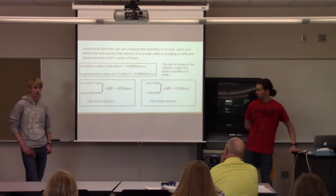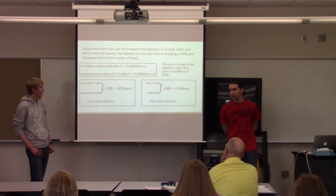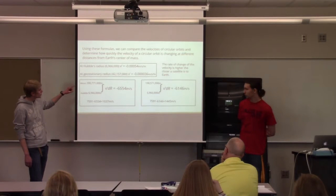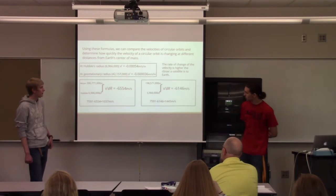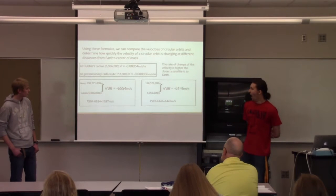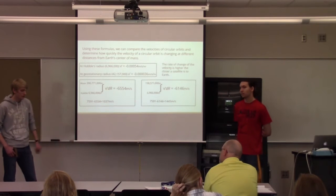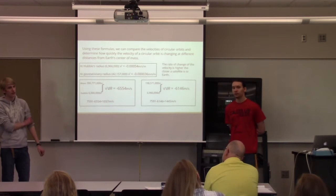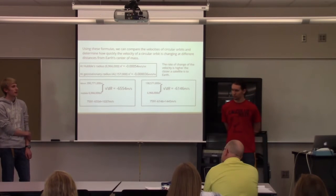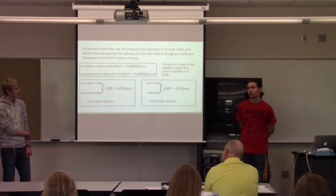And then I looked at different velocity differences. Here's between the Moon and Hubble, which was about negative 6,500 meters per second, which would be the speed at which a satellite travels at the Moon's radius. And that's pretty close because I think the Moon travels at about 1,010 meters per second.